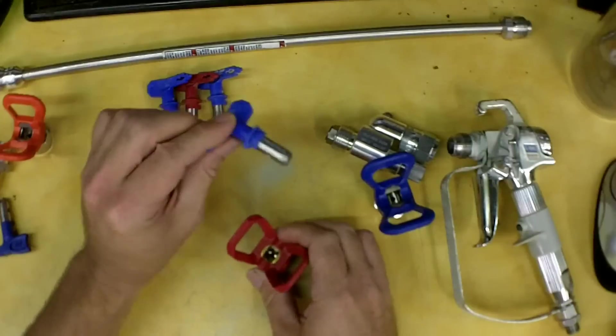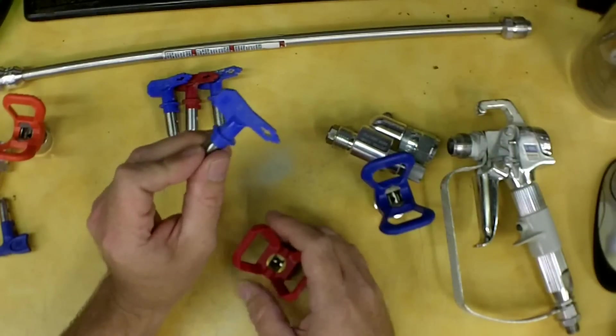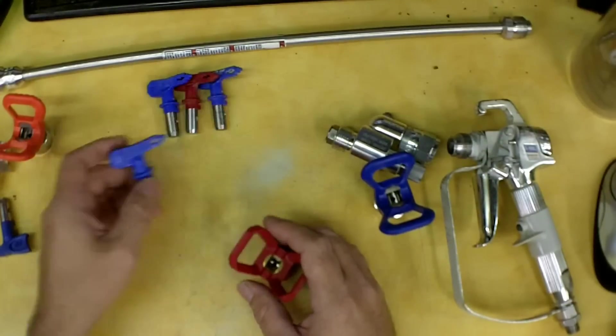Now these gun nozzles, these tips here, the only way to change your fan pattern is to change the size of the tip. For example, this is a 211, which means it will shoot a 4-inch fan and it has an 11-thousandths orifice.